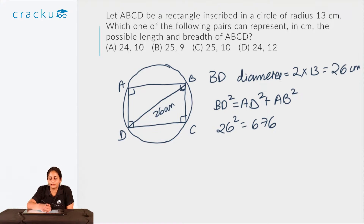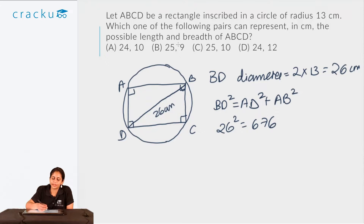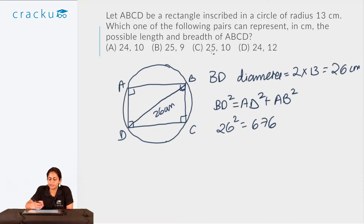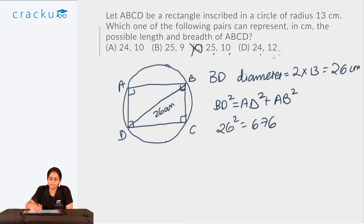Consider 24 and 10: the last digit of 24² will be 6, and the last digit of 10² will be 0, so the last digit of their sum will be 6 — this is a possibility. Consider 25 and 9: last digit of 25² is 4, last digit of 9² (which is 81) is 1, so their sum ends in 5 — wait, actually 4+1=5, so last digit is 5, not a possibility. For another pair ending in 6 and 4: sum of last digits is 0, so not a possibility either. So we narrow down to two possible cases.